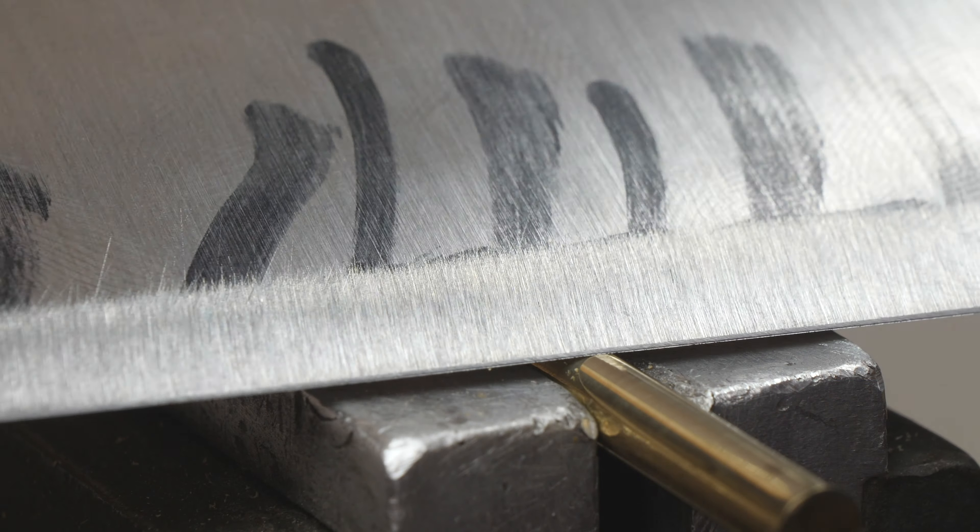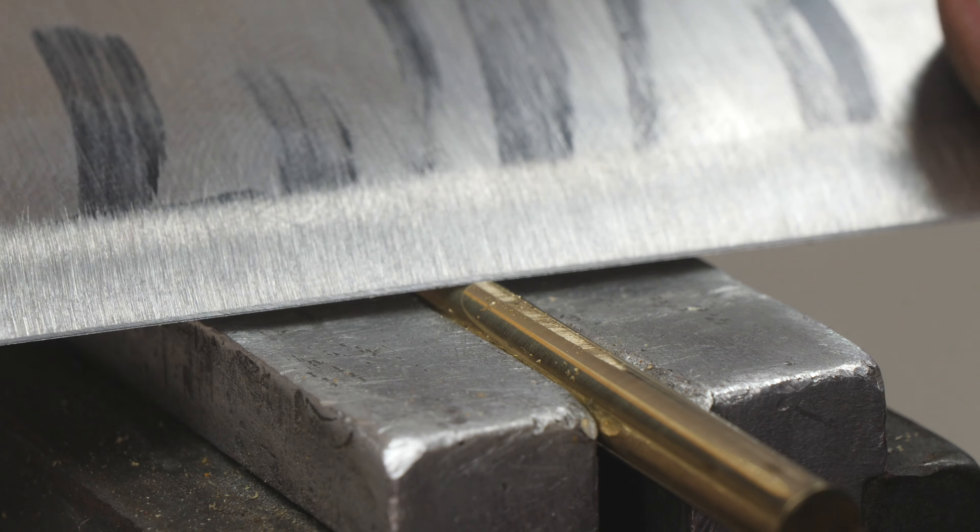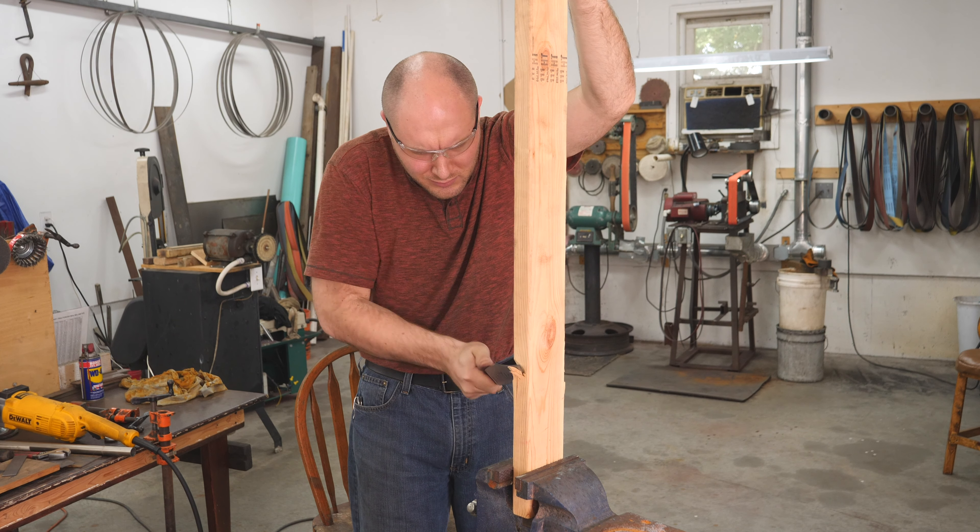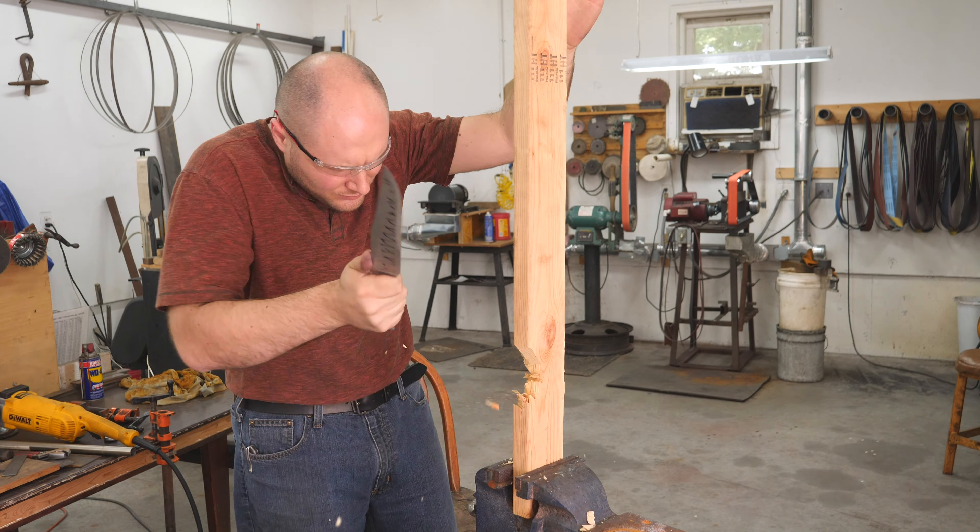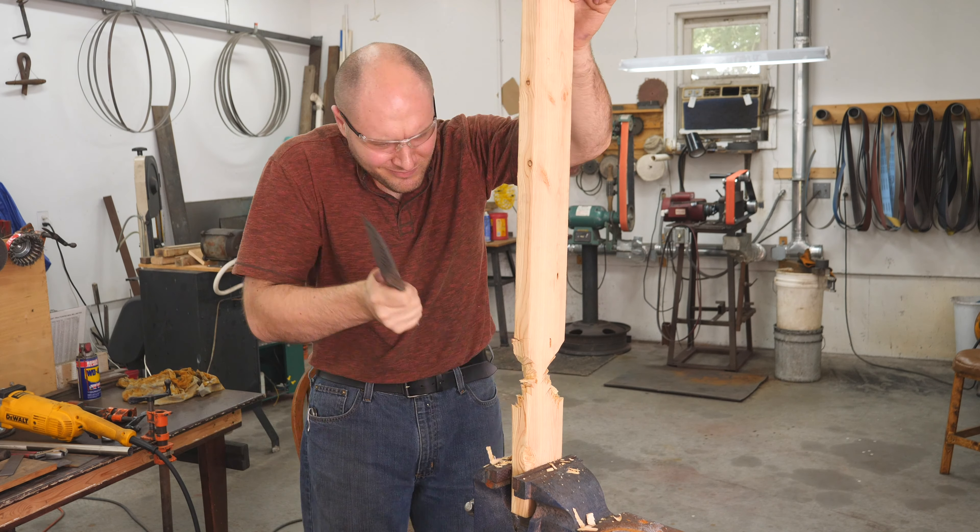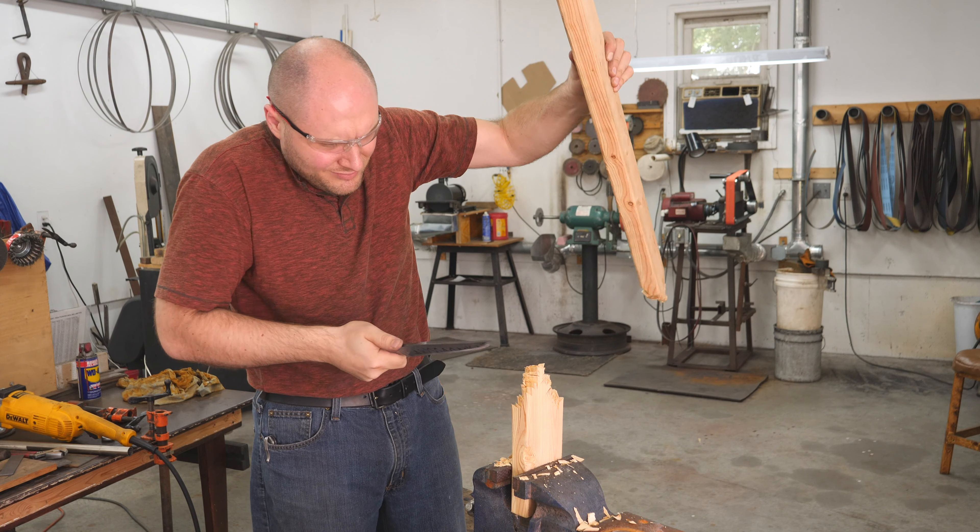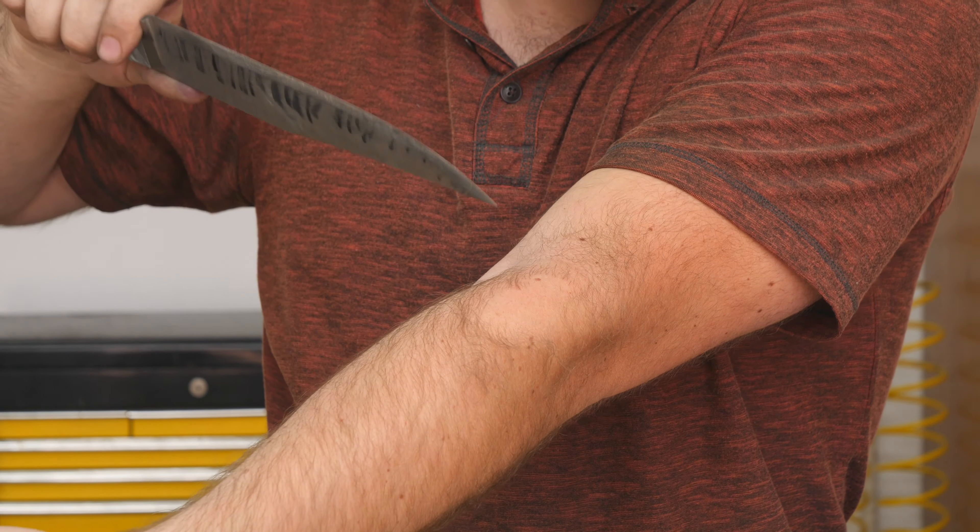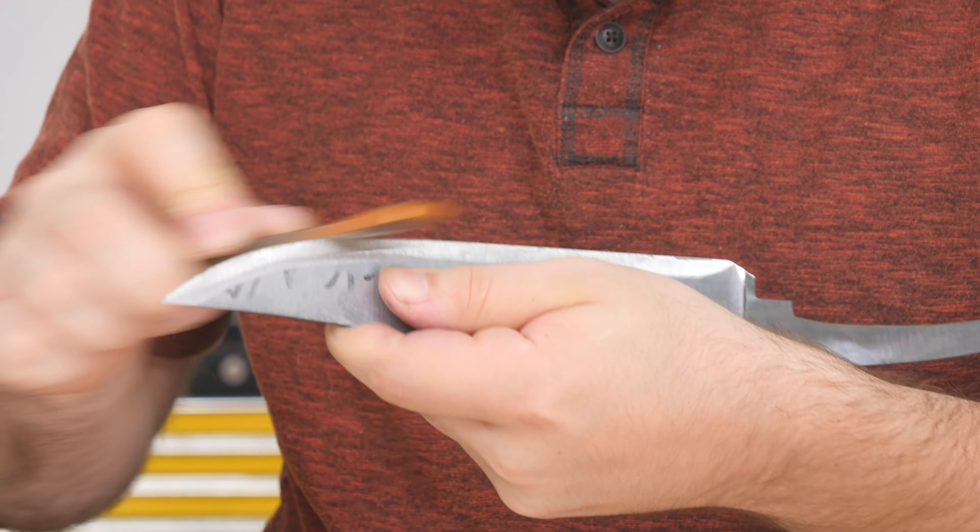The first test I do is a brass rod test where I run the edge over the brass rod and see if the edge flexes over it without chipping. You also want to make sure the edge doesn't stay bent over because that means it's too soft in that case. And then I chop through a couple two by fours, knots and all. After the two by four chopping, the entire edge is still shaving sharp. It's time to get rid of the edge so I don't cut myself while I'm working on the knife from here out.